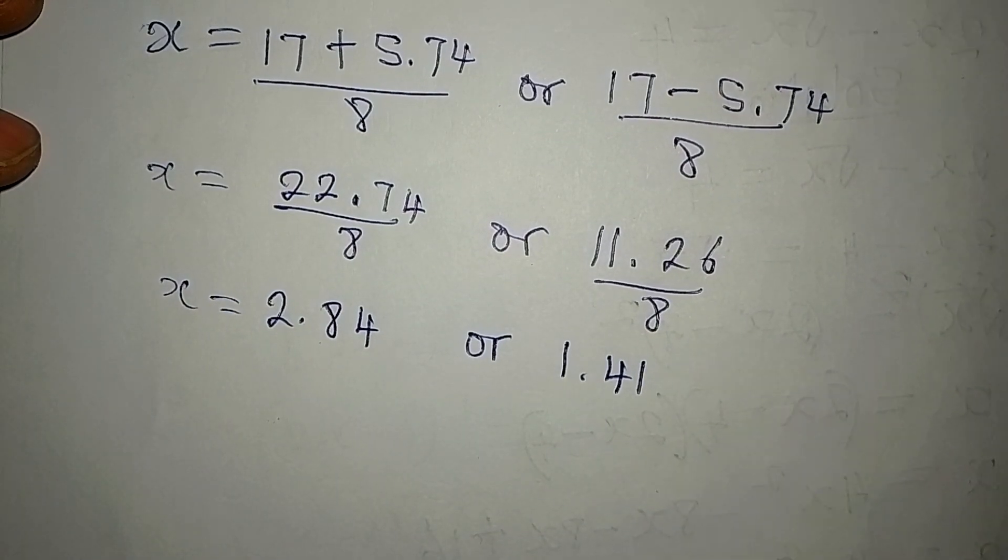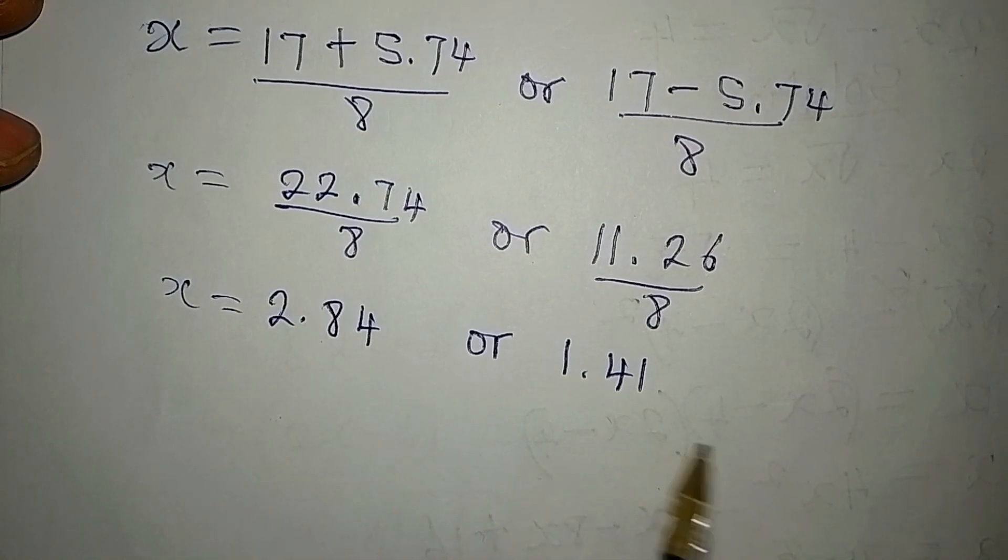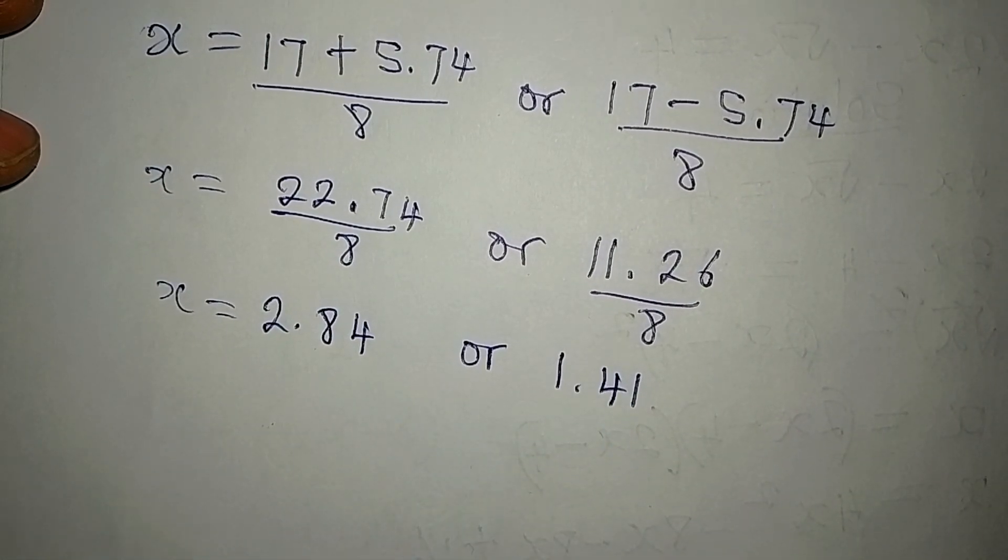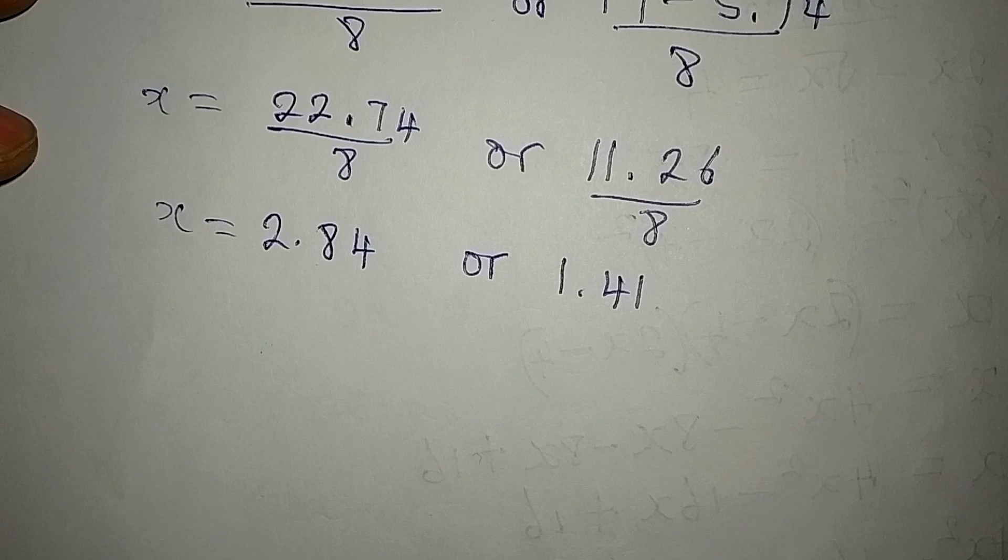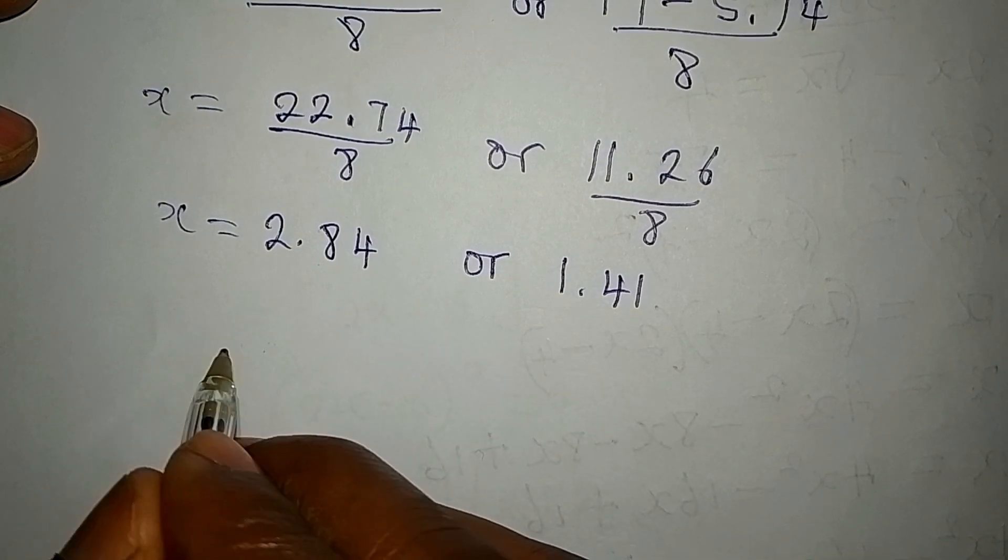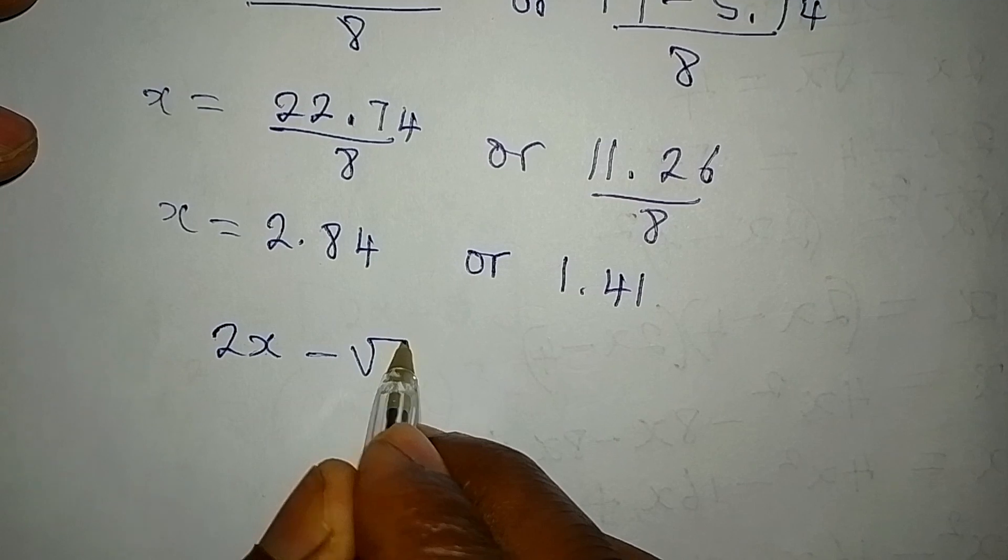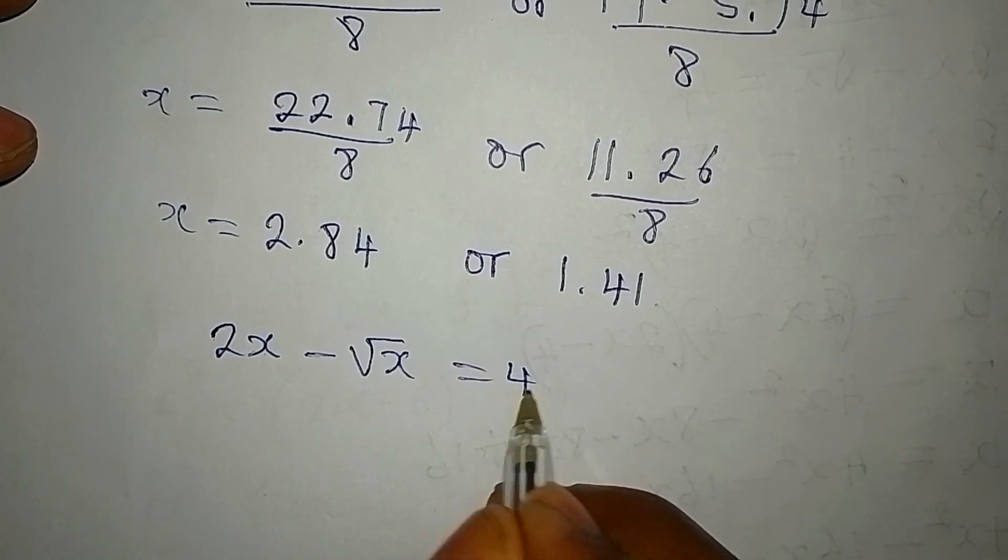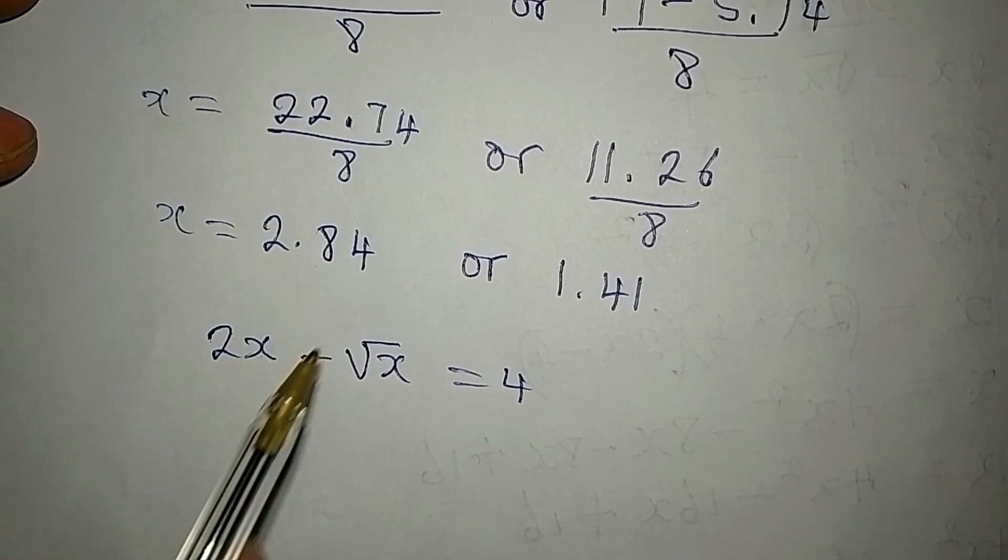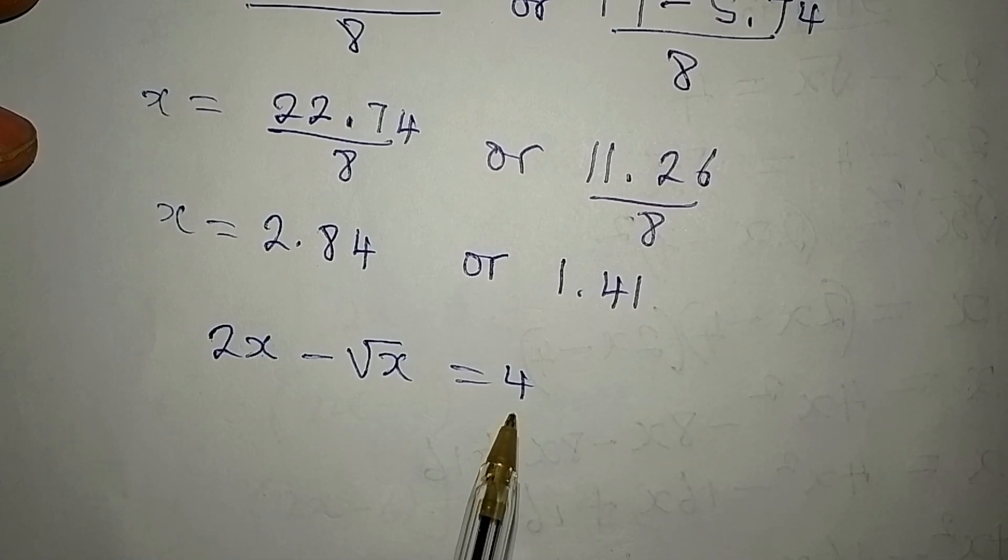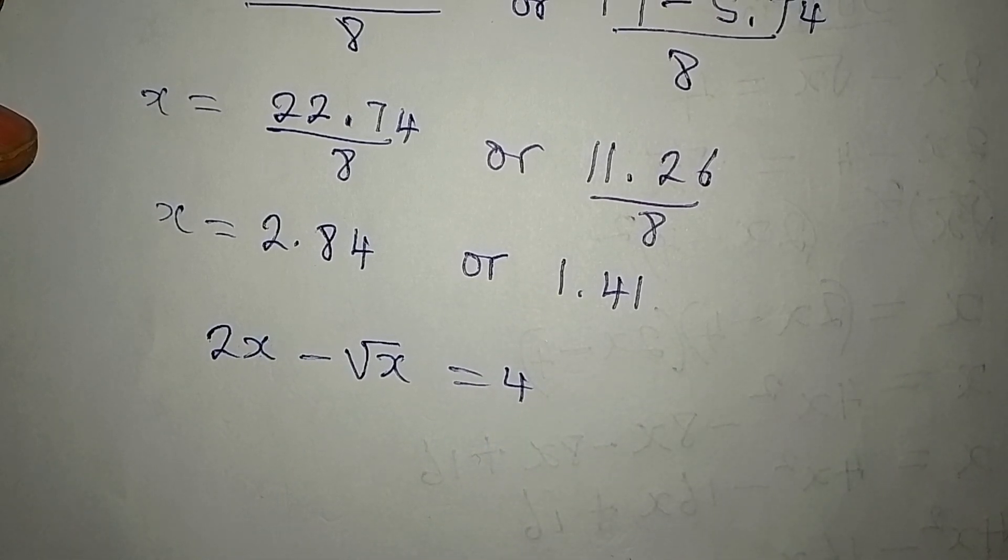But now, do you think both of them can satisfy the equation? Remember, these are approximated figures. Here is the original equation. We got 2x minus square root of x equals 4. So, which of these values would you input into this that will give you 4, approximately? You can let us know in the comment section. Thank you for watching.